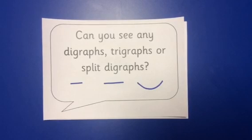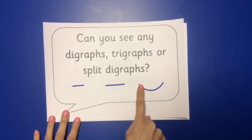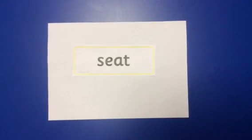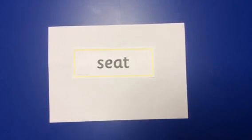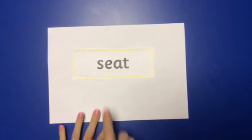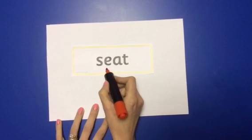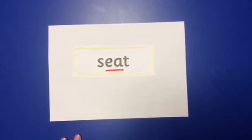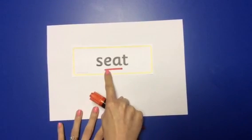Now I can ask myself the second question: can we see any digraphs, trigraphs or split digraphs? I take a careful look at the word and see if I can spot any of these. And yes, I can. Here is the 'ee' digraph. I'm going to show this with the digraph sound button — a line underneath the two letters making the same sound.